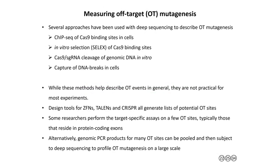There are lots of tools out there for measuring off-target mutagenesis. Groups have done ChIP-seq to see where Cas9 binds in cells, done in vitro site selection experiments, prepared genomic DNA and cleaved it with Cas9 in vitro to find off-targets, or done clever methods which capture DNA breaks in cells, prepare DNA libraries of those breaks, and do high-throughput sequencing. All of these methods have been really powerful in helping describe off-target events in general. But I would argue it's not practical to perform these off-target assays in most of your experiments — you really need to avoid off-target activity in the first place.